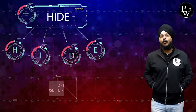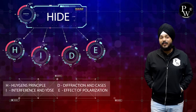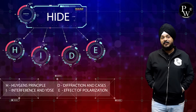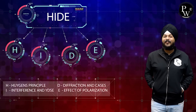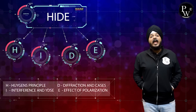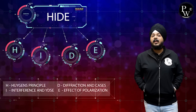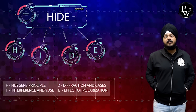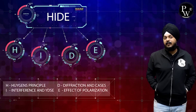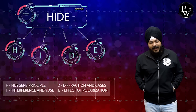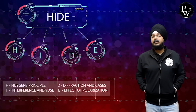H stands for Huygens' principle and its wave fronts, with the proof of refraction and reflection by the wave front. I stands for interference and Young's double slit experiment with its special cases. D stands for diffraction — the single slit diffraction and its respective cases.